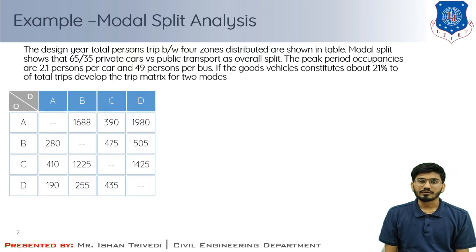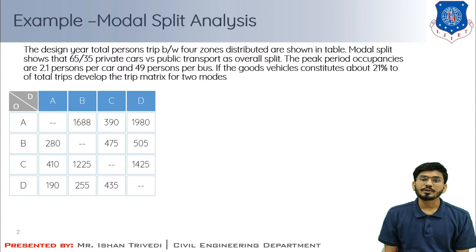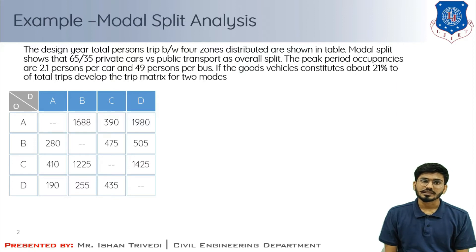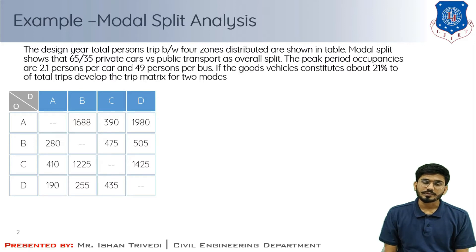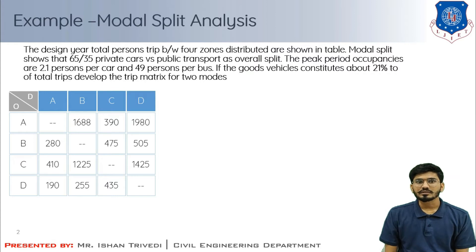Based on that we have to compute the modal split. The peak period occupancy data given is 2.1 persons per car and 49 persons per bus. If goods vehicles constitute about 21% of total trips, then we need to develop the trip matrix for two modes.